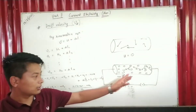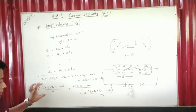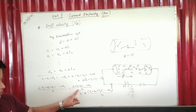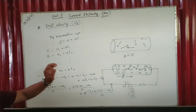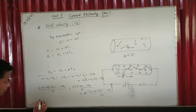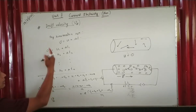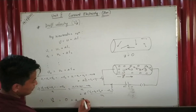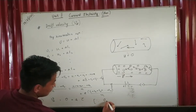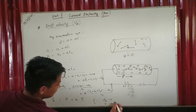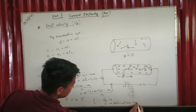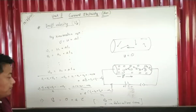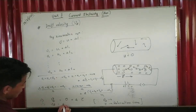The left side divided by n gives the average final velocity. The initial velocity average is zero because the motion is random. So the average velocity vd equals zero plus a times tau, where tau is the average time — the relaxation time. Therefore, the drift velocity vd equals a times tau.